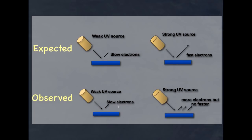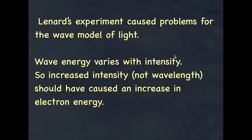What Lenard observed was that when he increased the intensity of the UV light, there were more electrons released, but they were no faster. This was really odd because he expected that firing more energy at the substance would convert some of that energy into kinetic energy of the electrons. But that's not what happened, and he was really at a loss to explain it. This experiment caused real problems in understanding the wave nature of light.